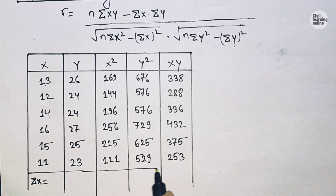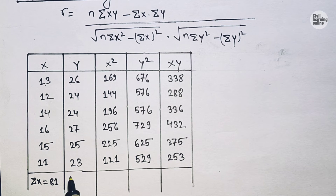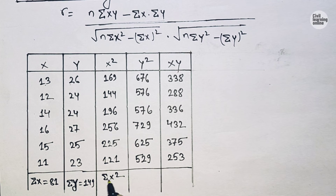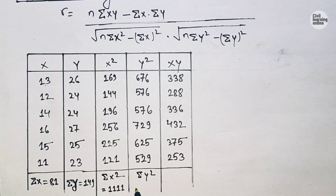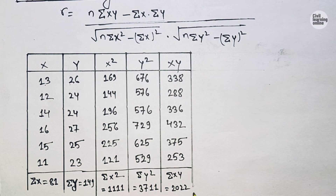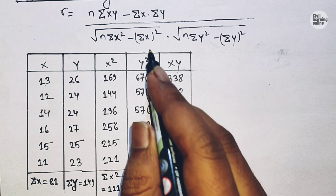Now we calculate the summations. Adding all values of X gives summation X equals 81. Adding all values of Y gives summation Y equals 149. Adding all values of X square gives summation X square equals 1111. Adding all values of Y square gives summation Y square equals 3711. And summation XY equals 2022.